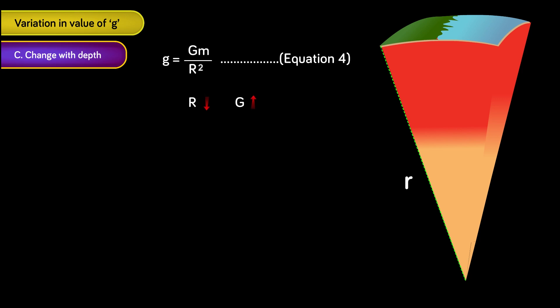However, the part of the Earth which contributes towards the gravitational force felt by the object also decreases. This means that the value of m to be used in equation 4 also decreases. As a combined result of change in r and m, the value of g decreases as we go deep inside the Earth. Point D.